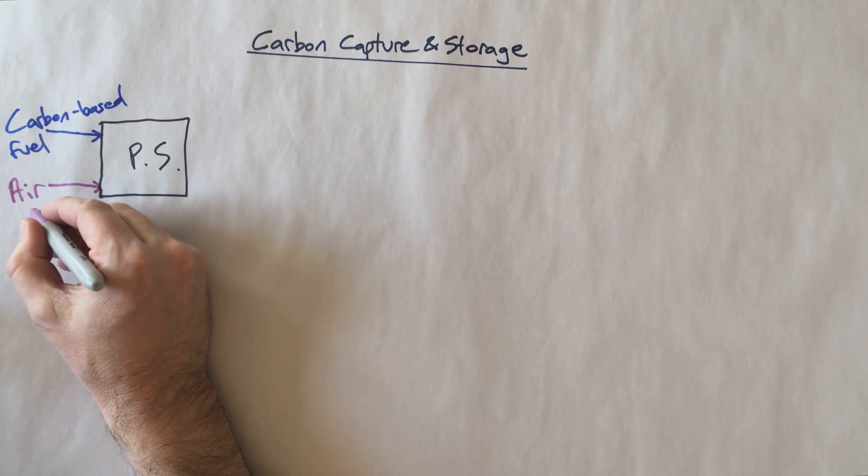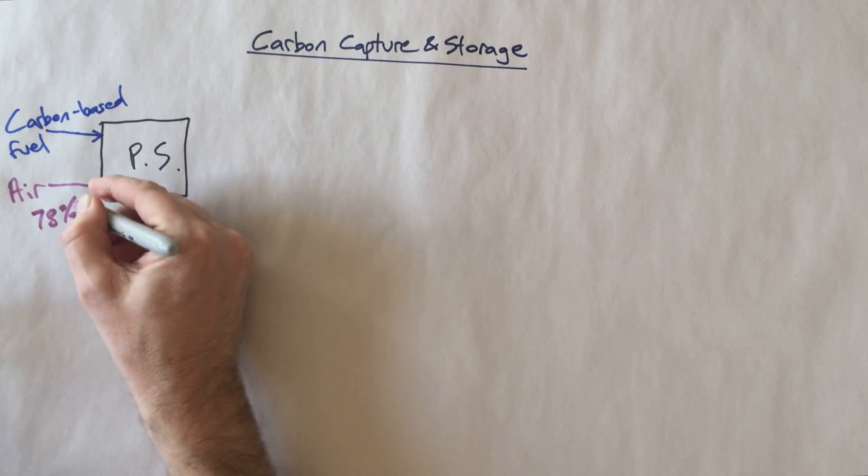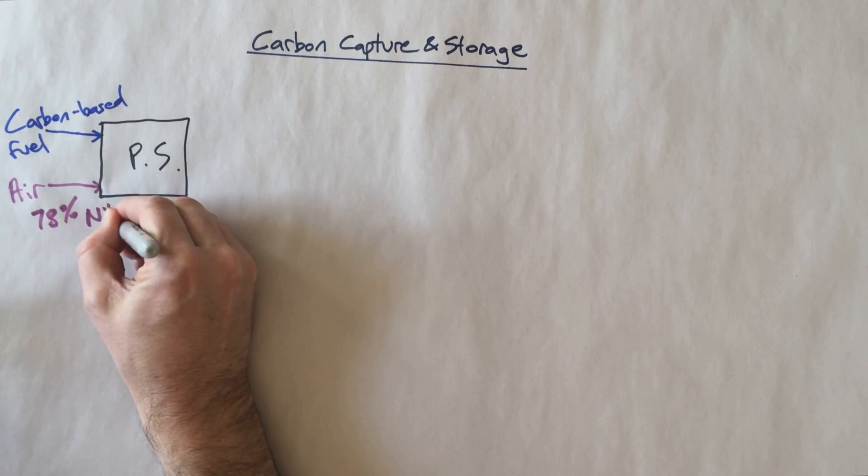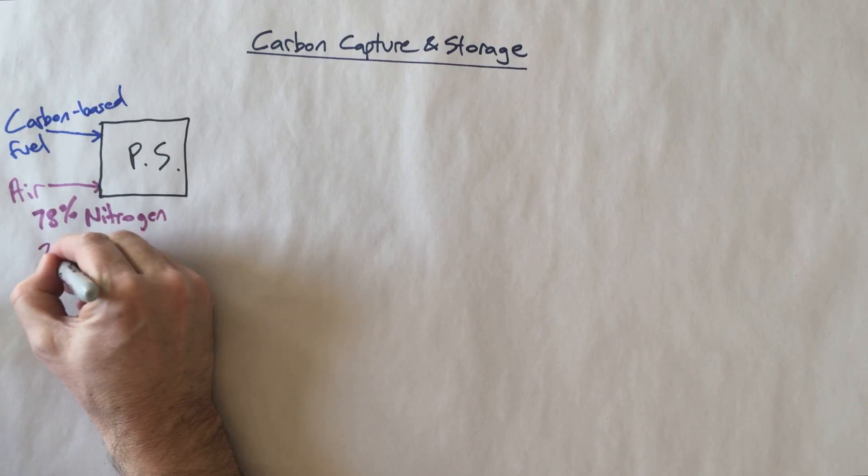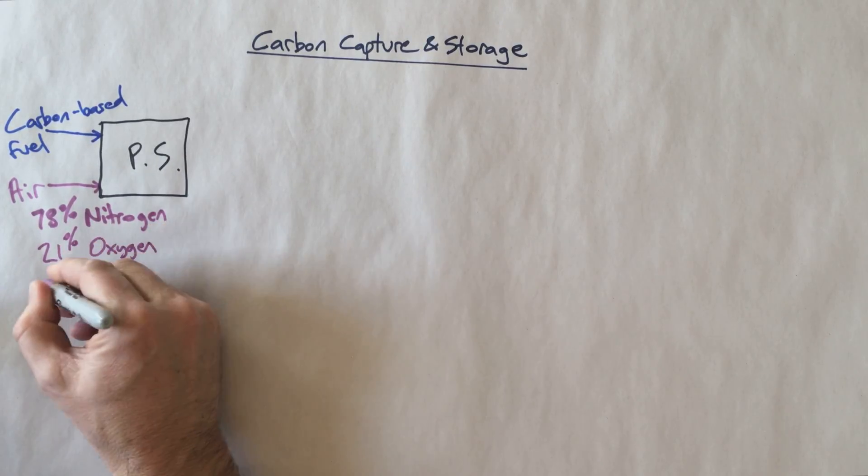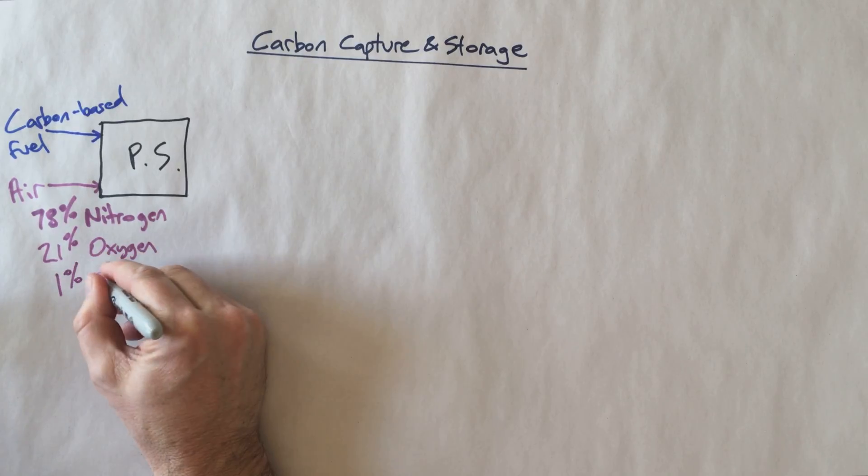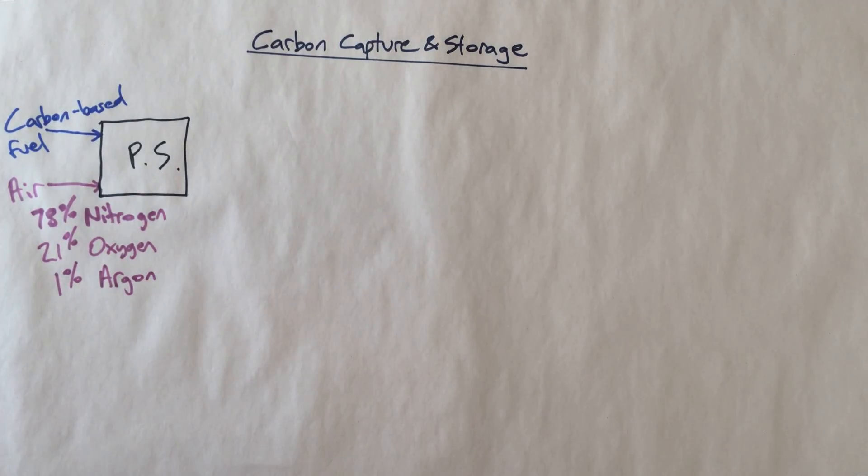it's approximately 78% nitrogen, around 21% oxygen, and roughly 1% argon. Argon is what's known as a noble gas. Basically it's inert. It doesn't really react with anything.